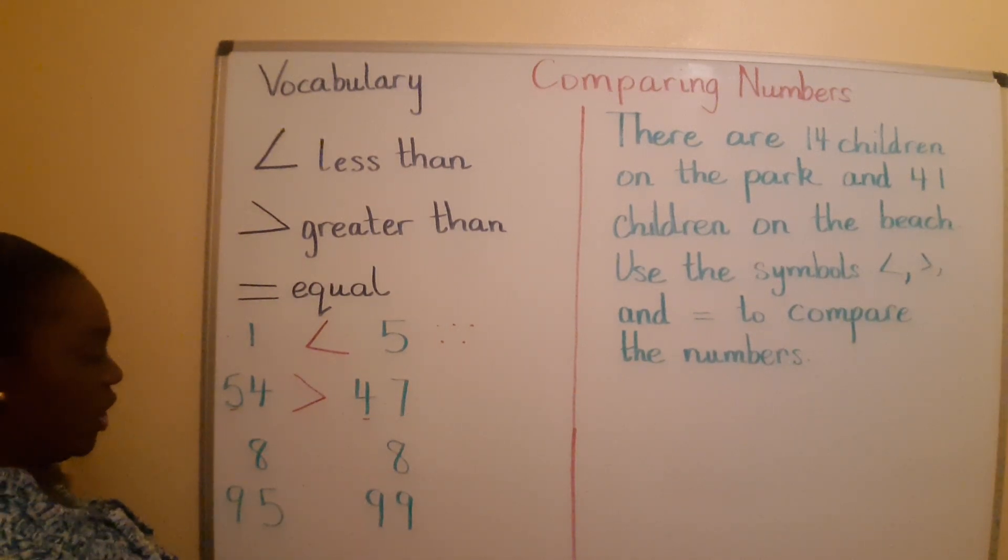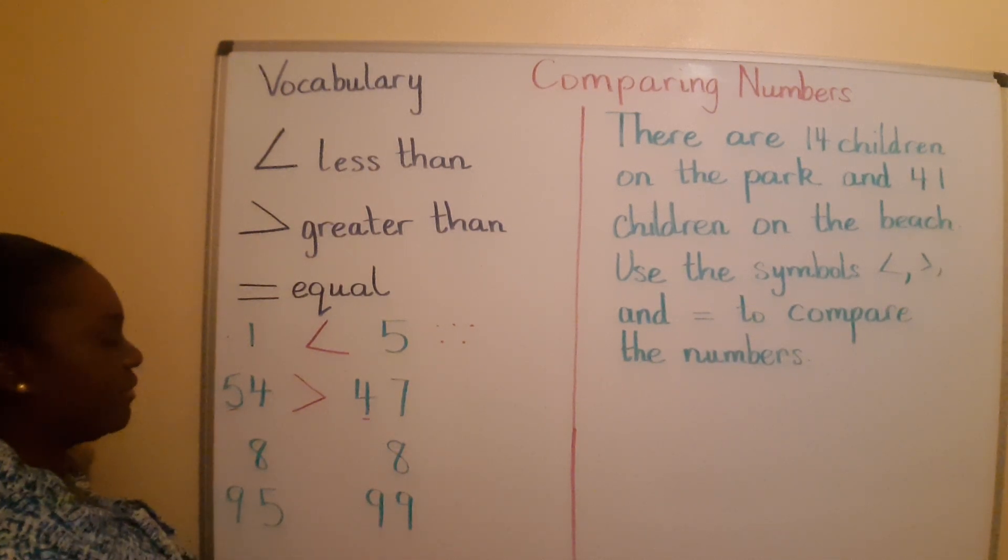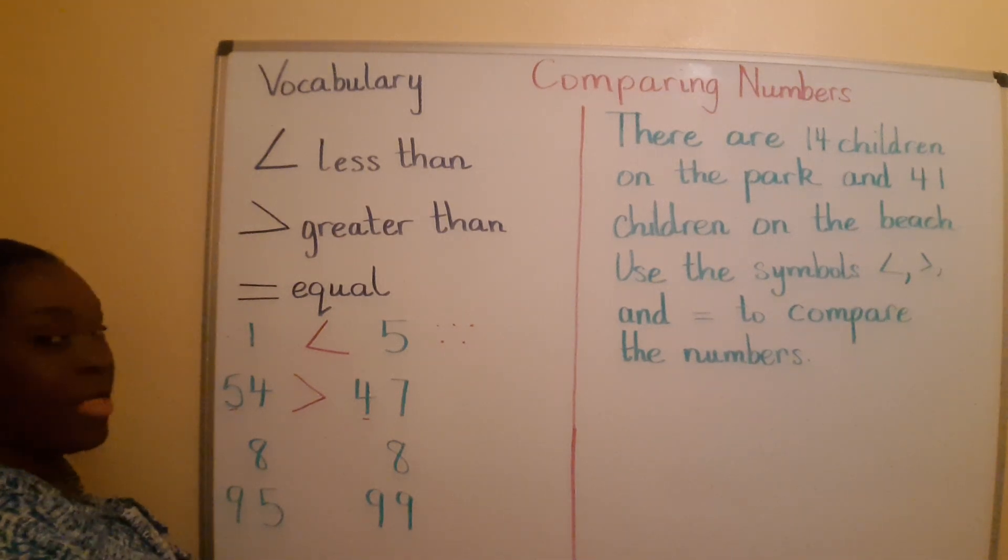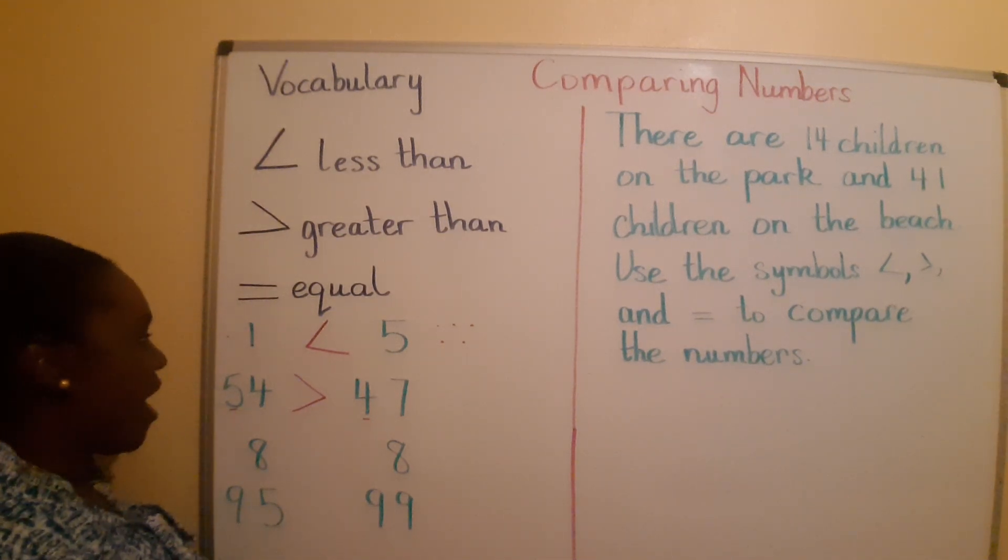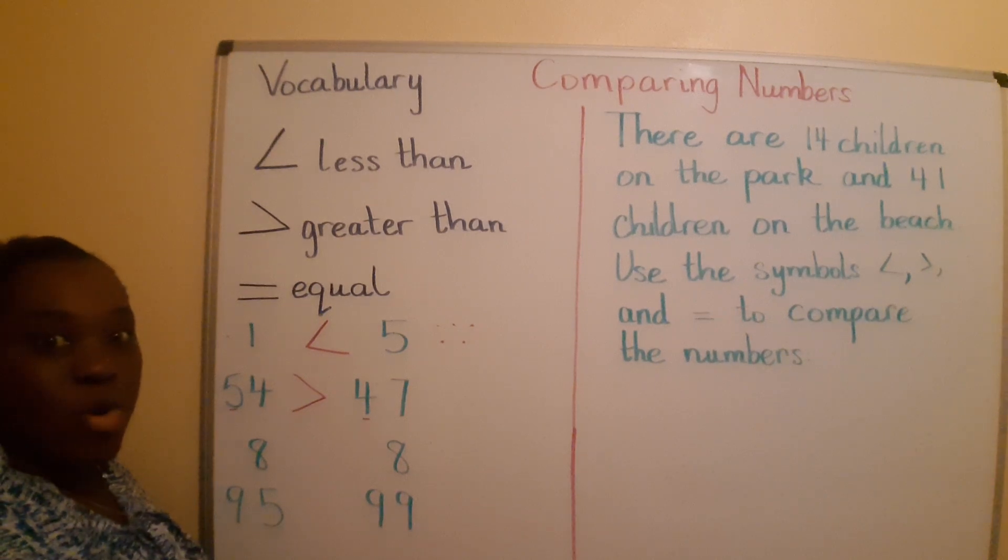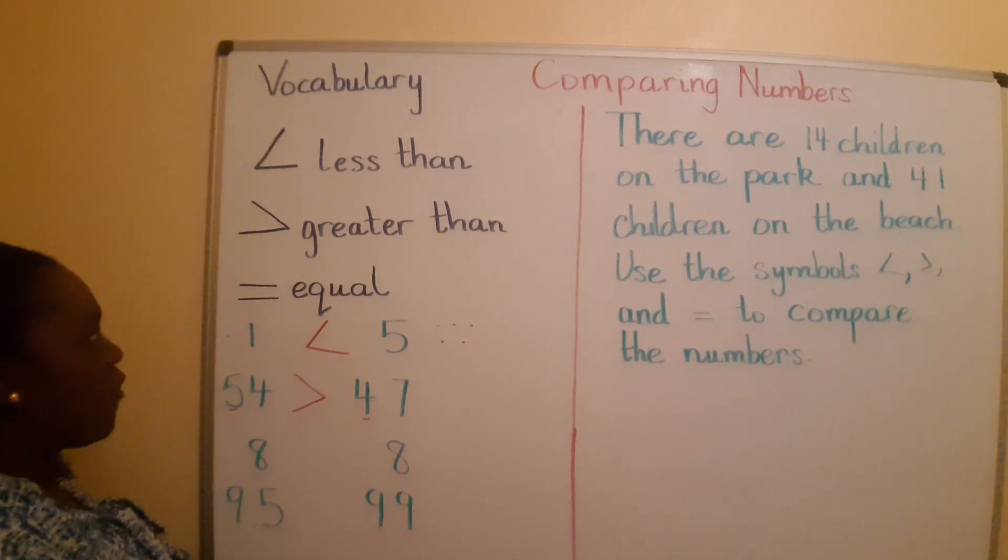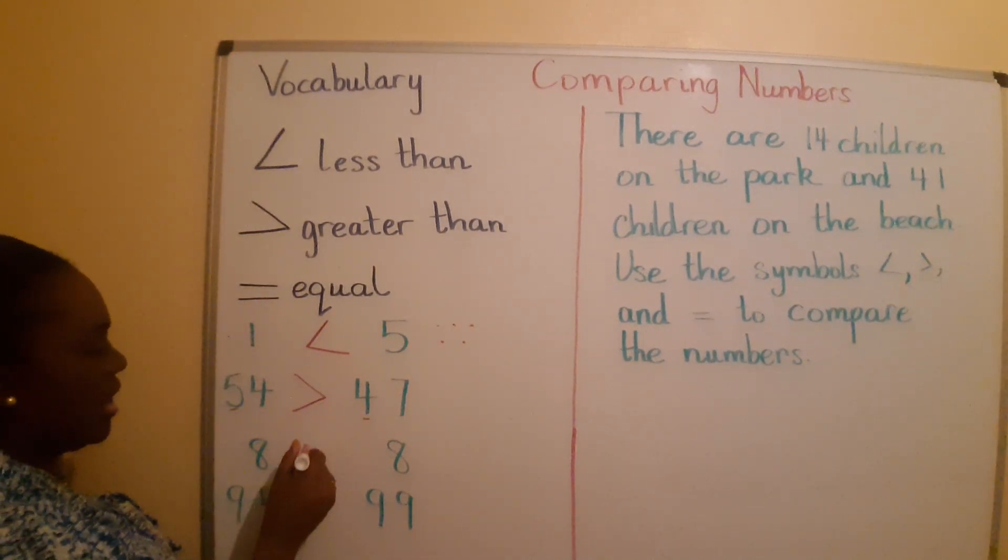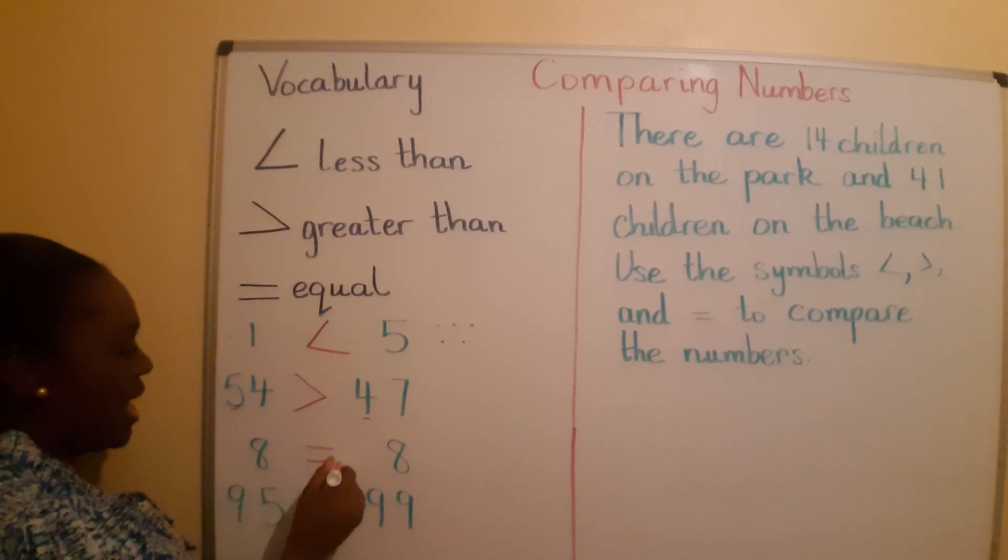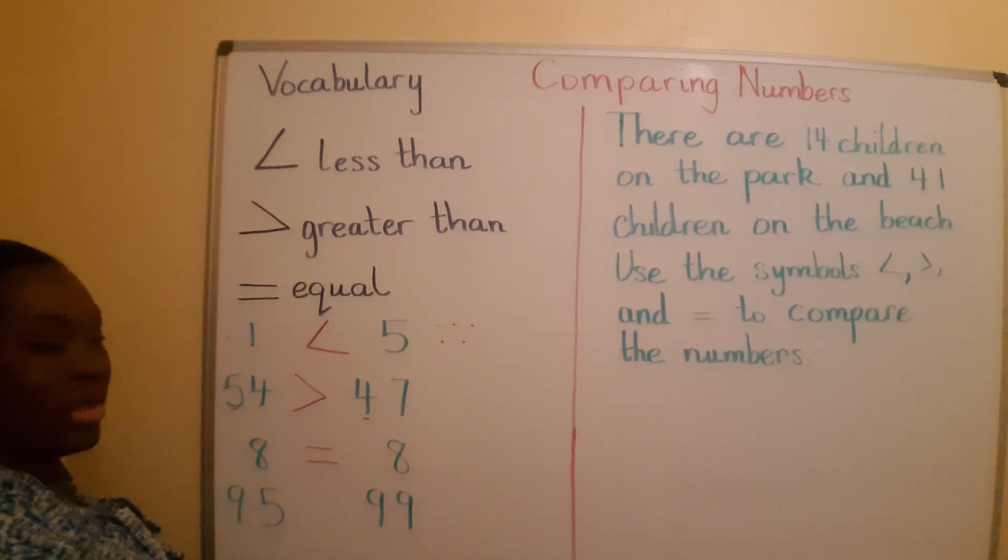Now, what are we going to do here? We have the number 8 and 8. Exactly. They are both of the same value. So, therefore, we should put equal. 8 is equal to 8, it is the same.